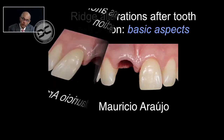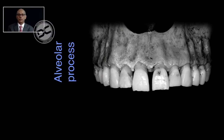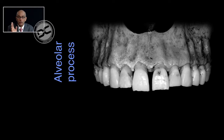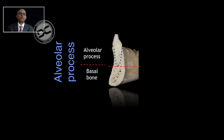Now let's start with Part one: Ridge Alterations of Tooth Extraction — Basic Concepts. The first basic concept I'd like to tell you about is anatomy. Let me define the site in which the alveolar socket resides, and that is the alveolar process. The alveolar process may be defined as the bone that surrounds the root of a fully erupted crown or tooth. You can see in your slide that the alveolar process is depicted in yellow — that's the site in which the alveolar socket resides.